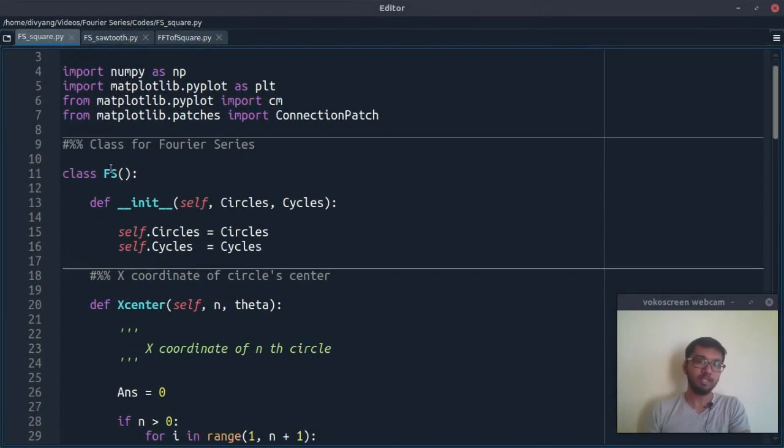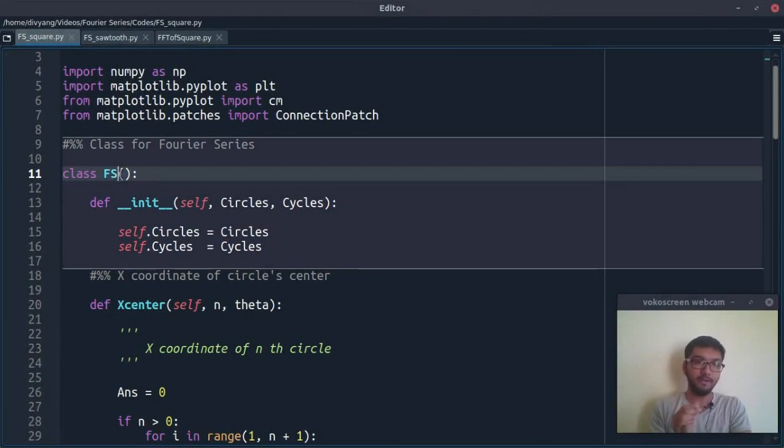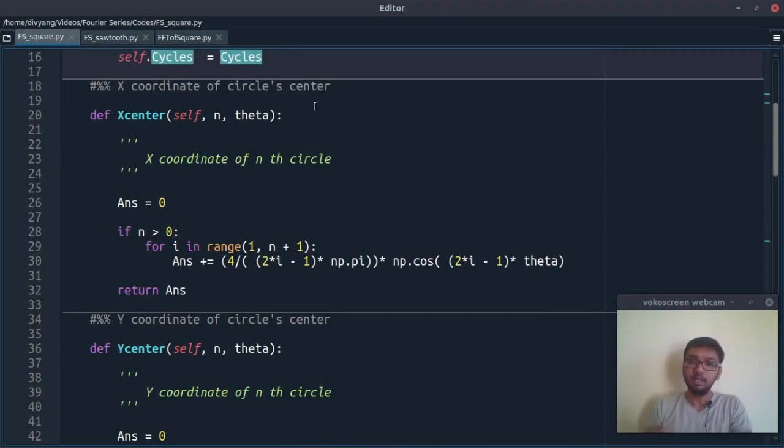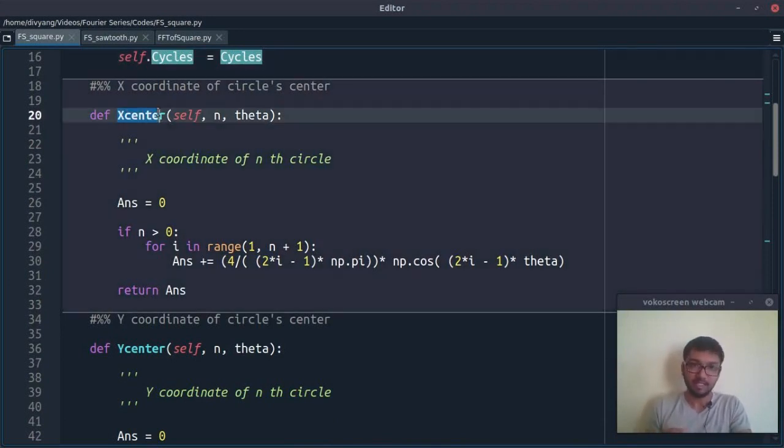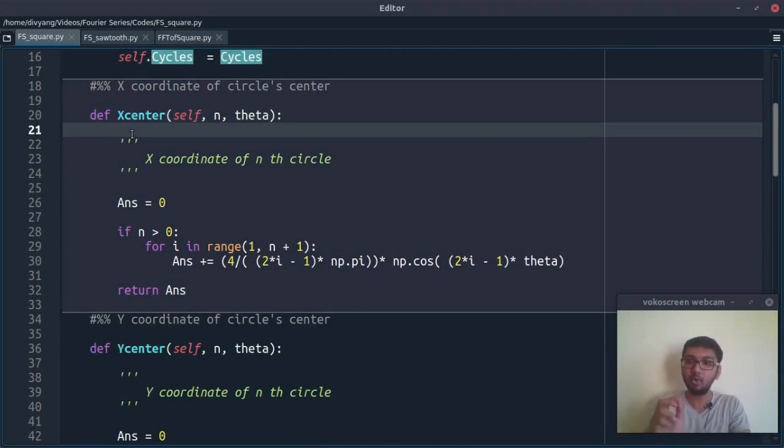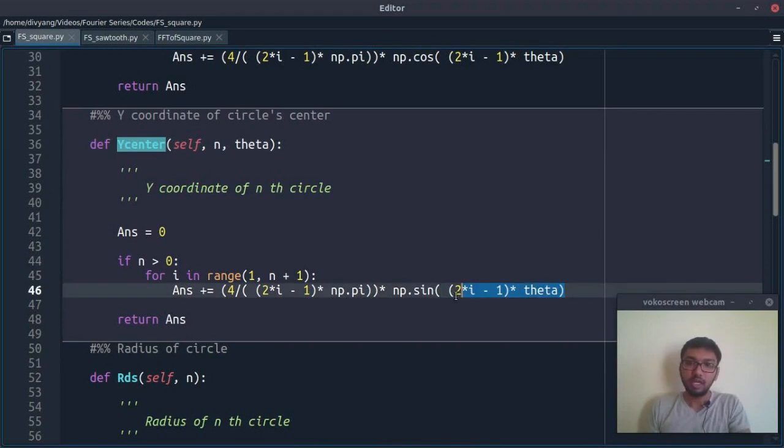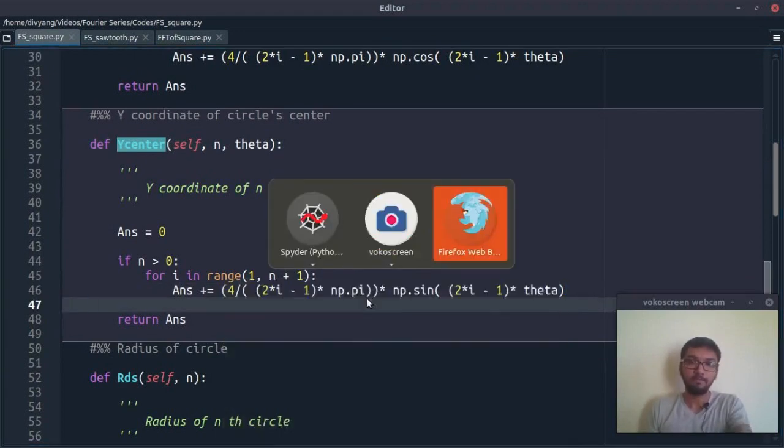Let's jump to the coding stuff now. I have written this code. If you notice, I have defined an object named 'fs' which has two inputs: circles and cycles. Circles input means how many circles we want in our animation, and cycles means how many times we want to rotate this animation.